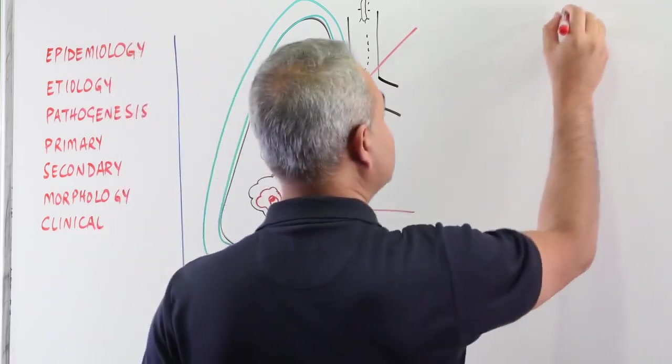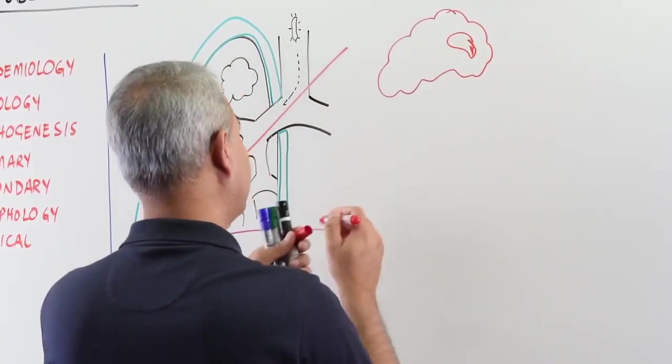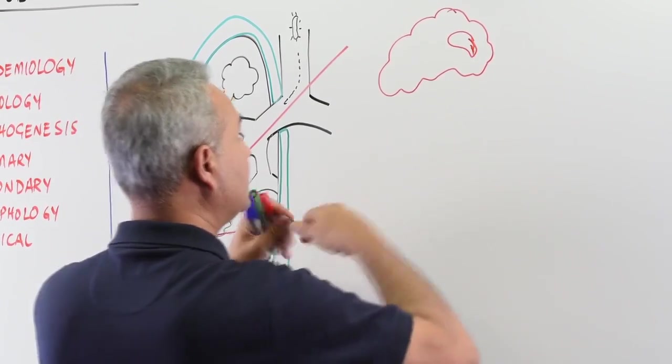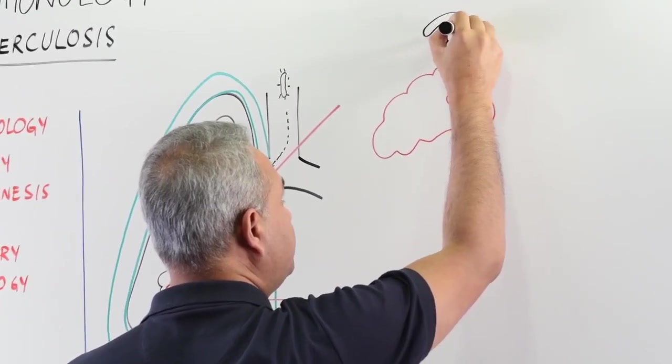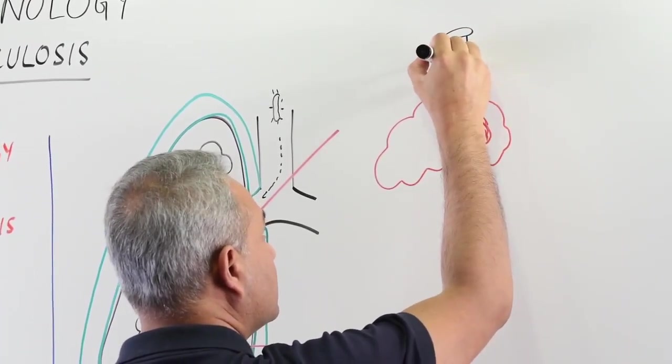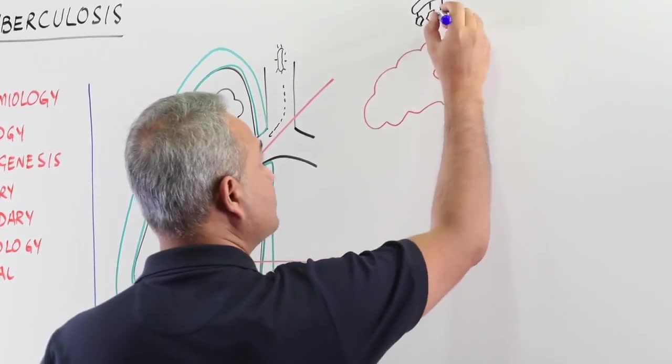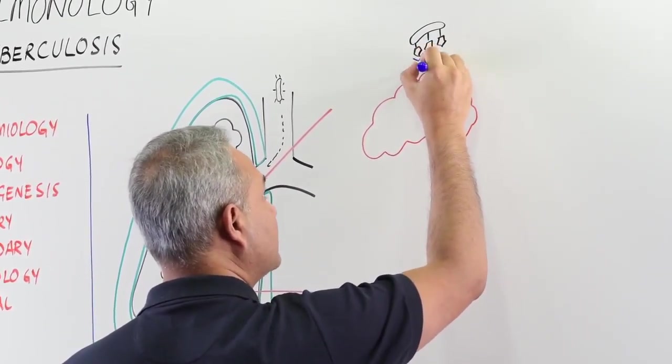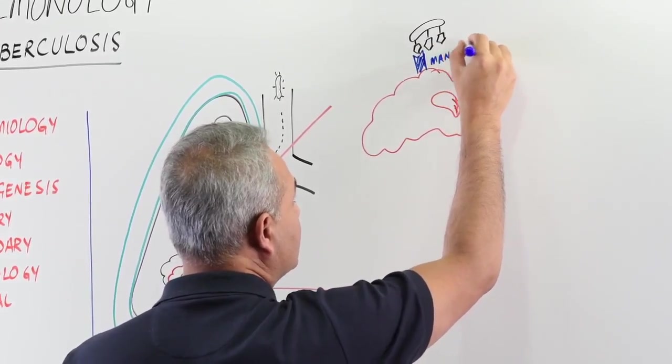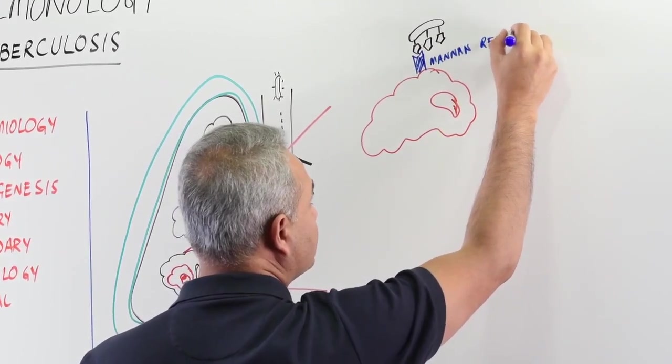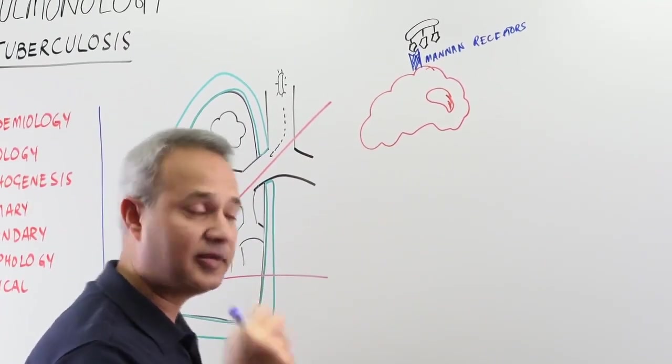Let's go here. This is the alveolar macrophage. This is the nucleus of the macrophage. Macrophage connects with the pathogen in multiple ways. Most important is the mannose binding. There is mannose present on the pathogen surface and there are mannose receptors on the macrophage. That is one mechanism by which macrophage arrests the mycobacterium tuberculosis.